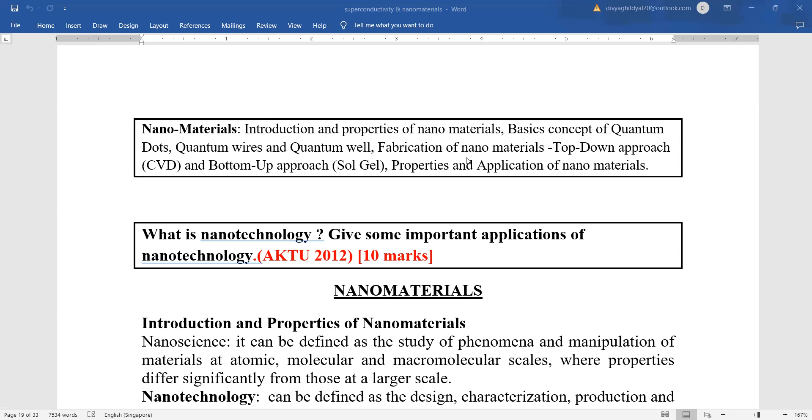Fabrication of nanomaterials. There are two approaches: Top-down approach, that is the chemical vapor deposition method, and bottom-up approach, that is the sol gel approach. You can be asked any one of these approaches for making nanomaterials. And lastly, you can expect last question of your paper asking you to write down the various applications along with properties of nanomaterials.